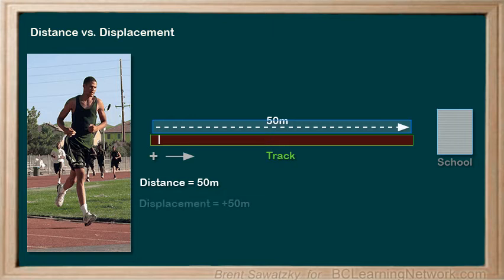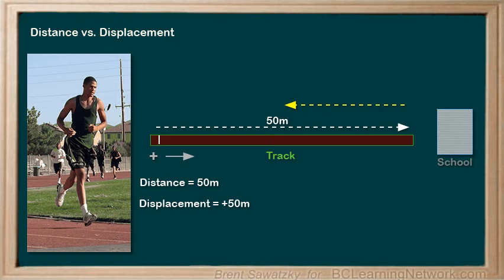After running his plus 50 meters, if he were to turn around and start running back towards the starting line, we'd say his next displacement was negative. If he stops halfway back to the starting line, we'd say his second displacement was negative 25 meters. The 25 meters is the magnitude and the negative indicates his direction.